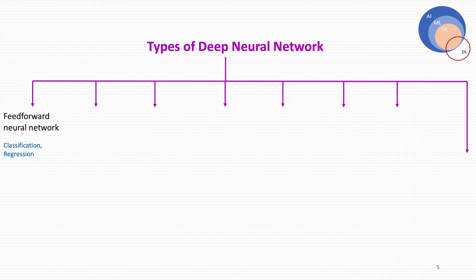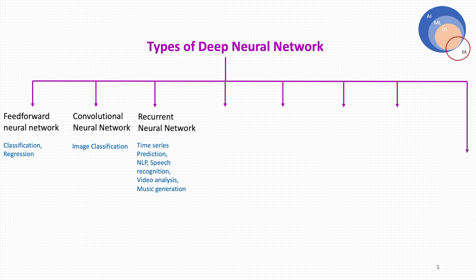Here are the types of deep neural networks. First is the feed-forward neural network — the simplest and earliest version — used to solve both classification and regression problems. CNN, the convolutional neural network, is most popular for image classification; it extracts local spatial features from an image and combines them into higher-order features. Next is the recurrent neural network, mostly used for time series data.